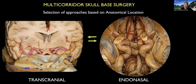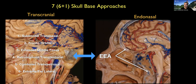Modern skull-based surgery is about selecting the proper approach for each individual case. We often discuss between transcranial and endonasal approaches. There are six categories of open skull-based approaches against one single category of endonasal approaches. This reflects the importance of endonasal surgery today to access many skull-based lesions — as important as the other six approaches combined. But we need to master them all as skull-based surgeons.